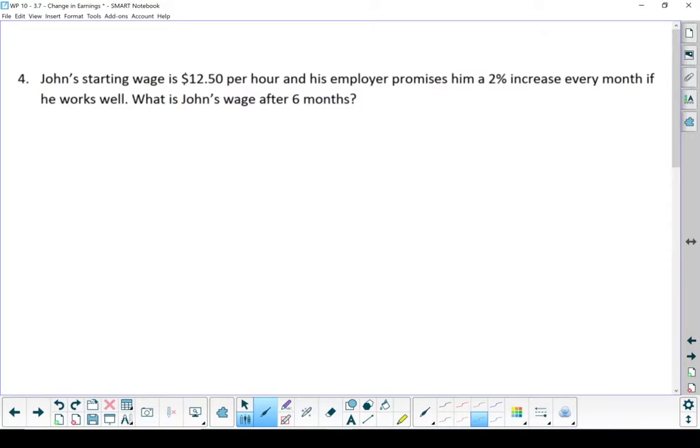Last example, John's starting wage is $12.50 per hour and his employer promises him a 2% increase every month if he works well. What is John's wage after six months? Let's start off by making the assumption that John is a good worker and he gets that wage increase every month.